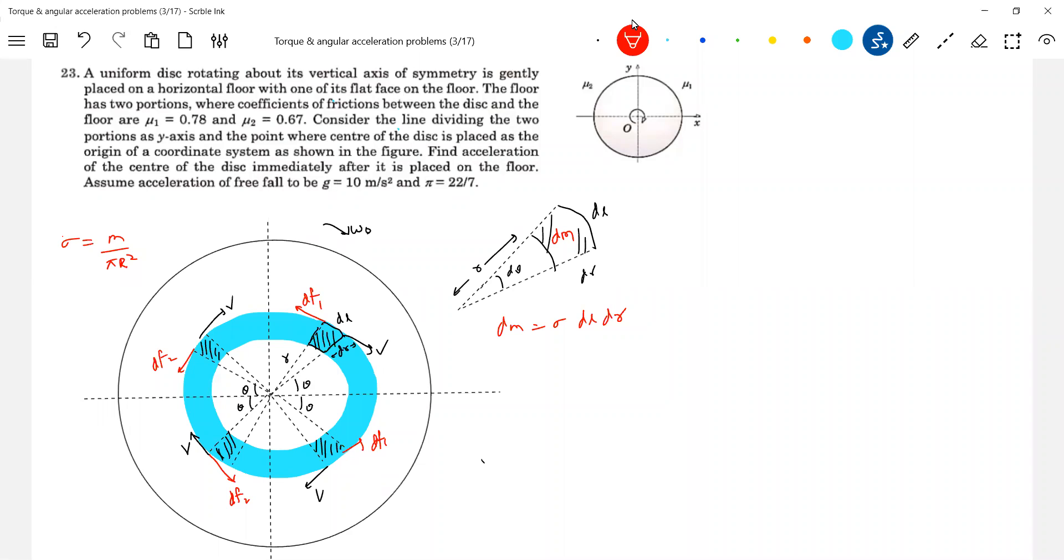Now let's come to the forces. So I know how to find out the dF. Now what is dF1? Mu dm. What is dF2? Mu dmg. So what is this frictional force? dF1 should be equal to mu dmg. What is dF2? Mu dmg.